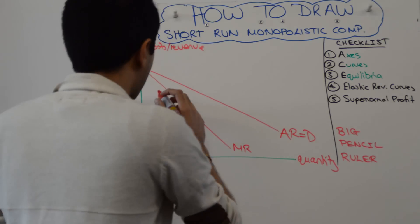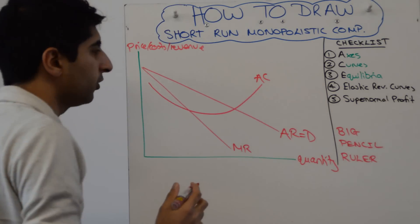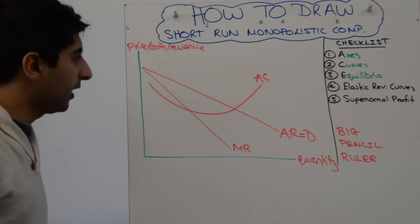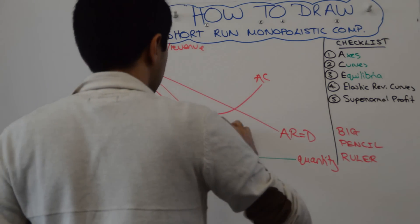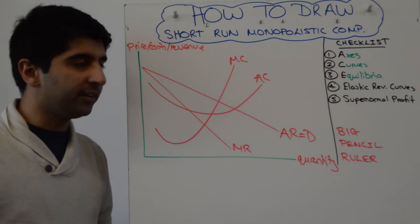Then you can draw your average cost like that. Label that with AC. And then your marginal cost is your Nike tick cutting AC at its minimum point like that. Okay so exactly the same procedure as with monopoly.